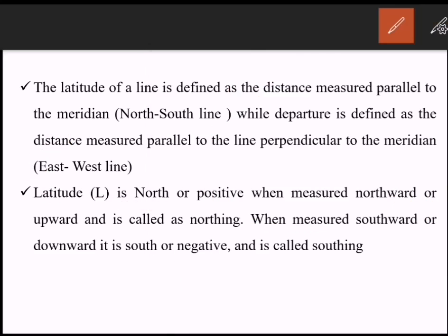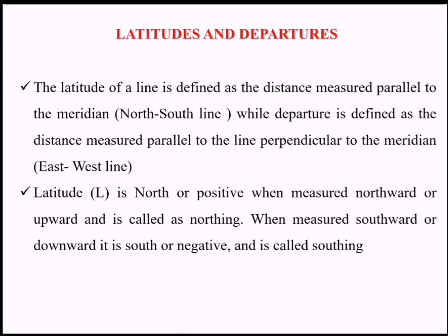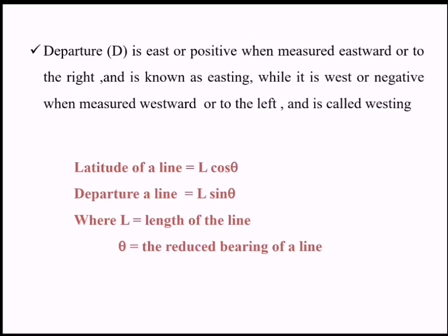Latitude is the distance measured towards the north-south direction and departure is the distance measured along the east-west direction. Latitude is positive when measured northward and is called northing; latitude is negative when measured southward and is called southing. Departure is east or positive when measured eastward to the right, known as easting, while it is west or negative when measured westward to the left, called westing.